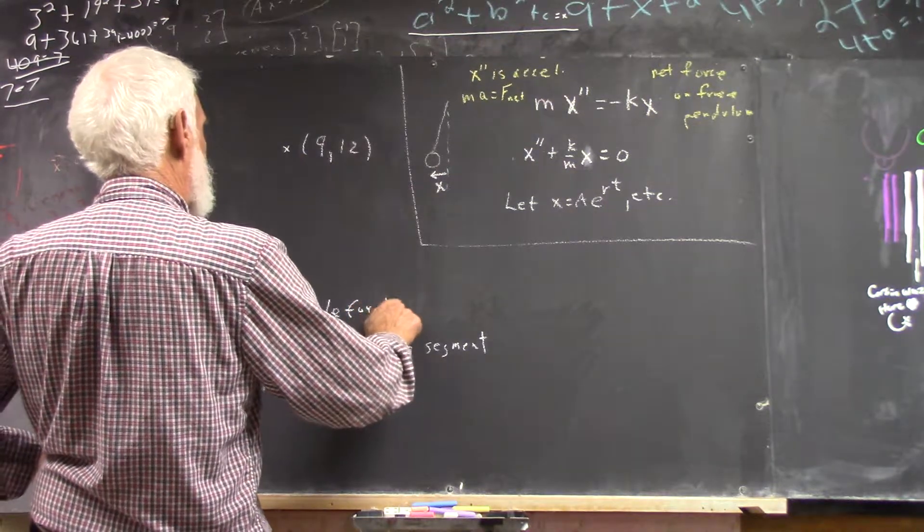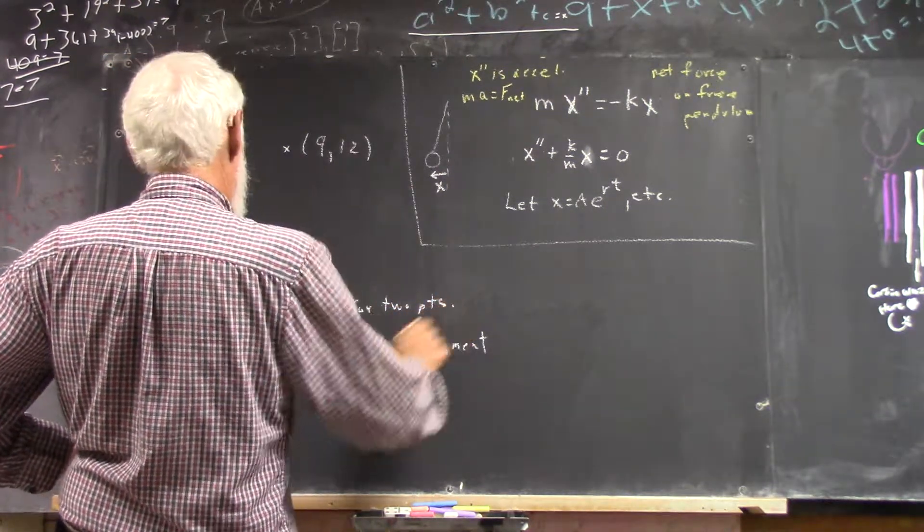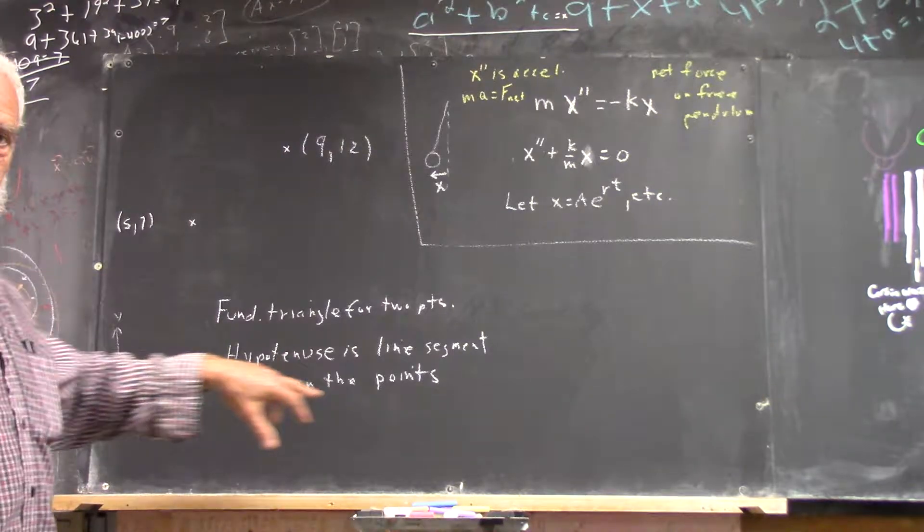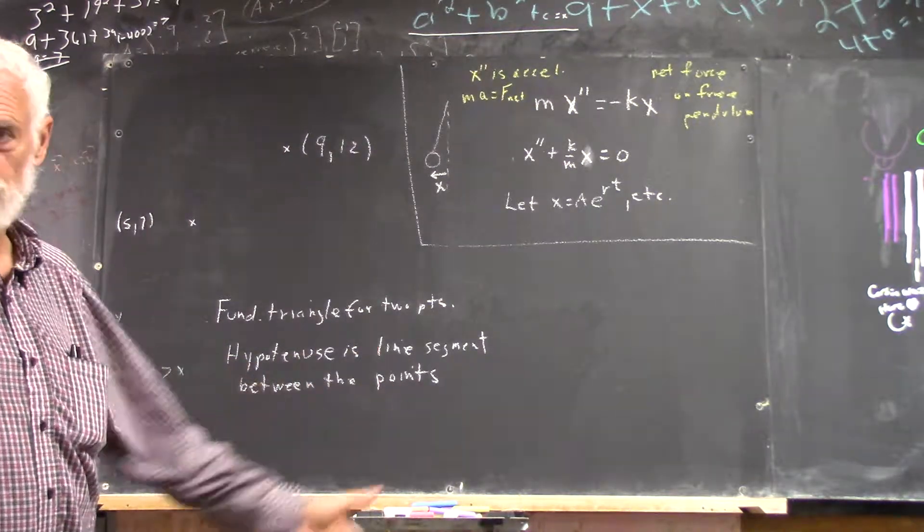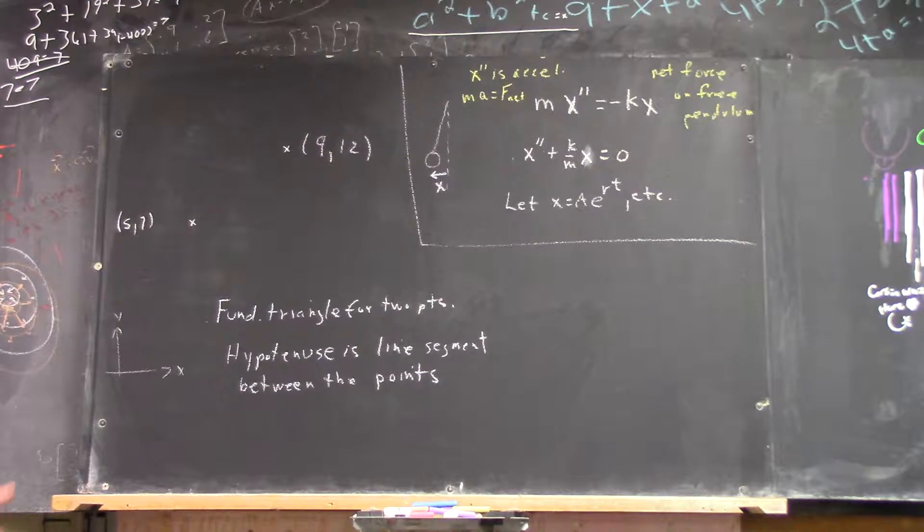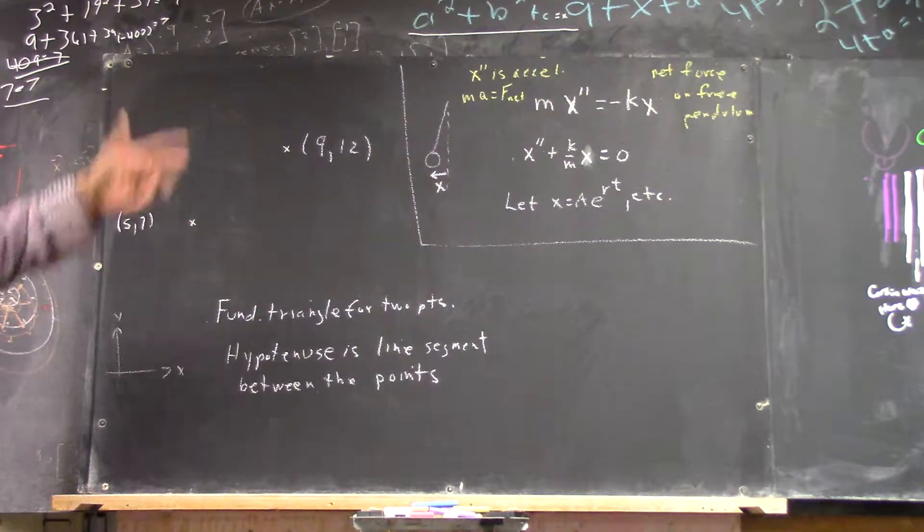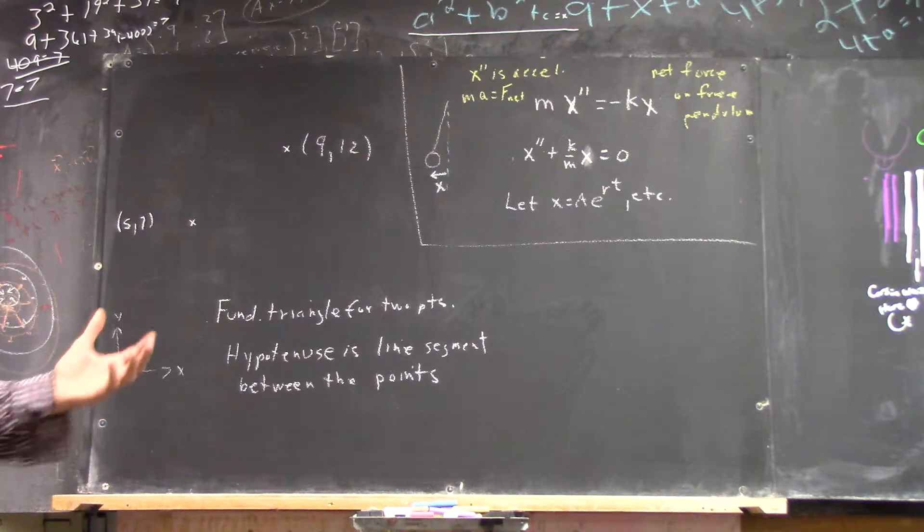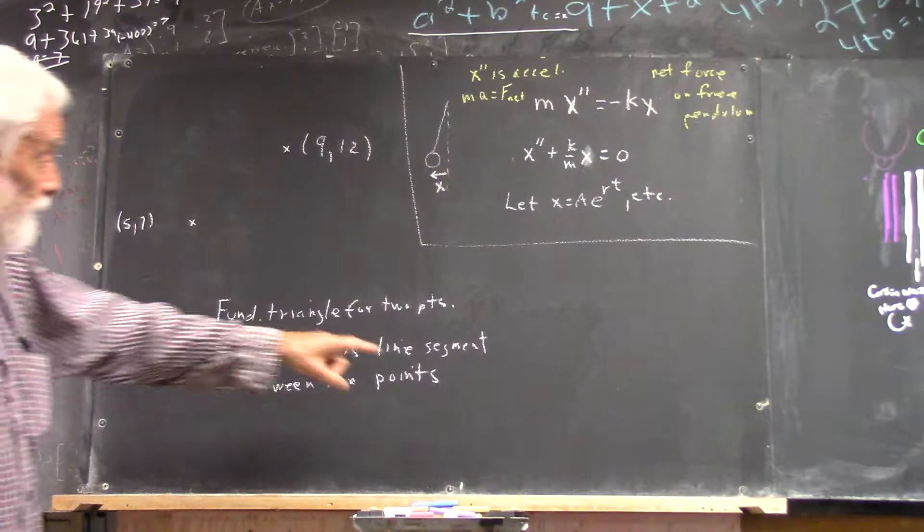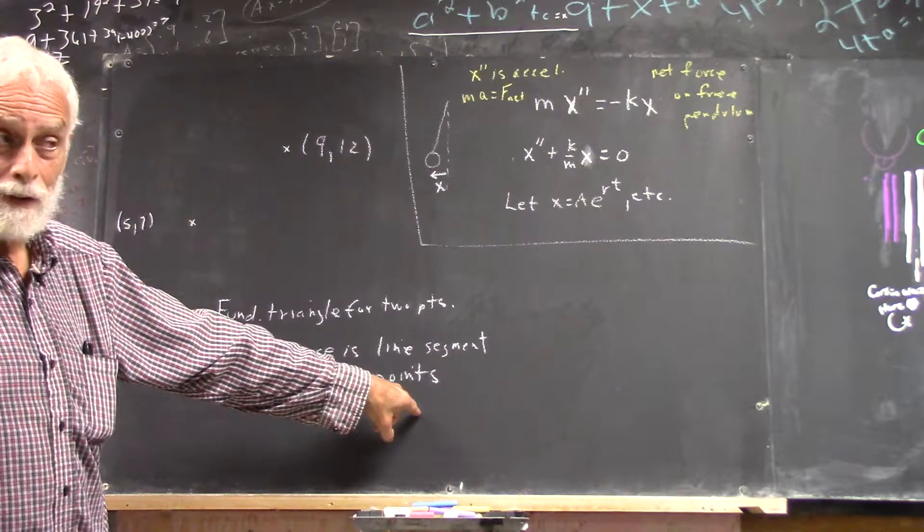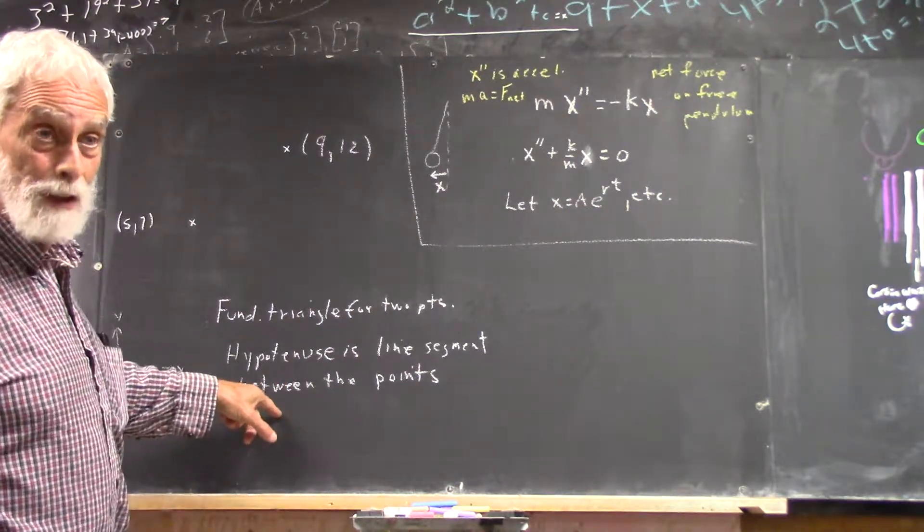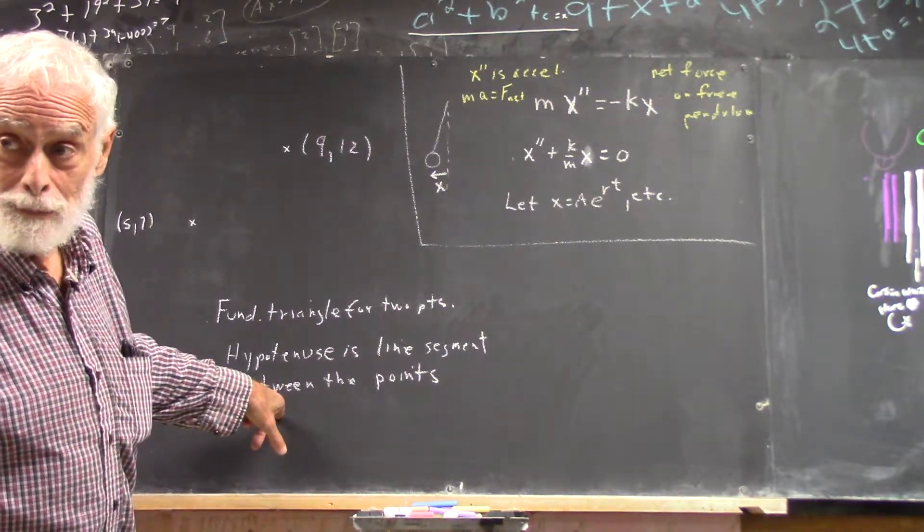I should say for two points. The hypotenuse is a line segment between the two points. The endpoints are the two points. So do I now know something about the fundamental triangle for these two points? Could I sketch something? I've got two points. There's a line segment between the points. I can sketch that line segment. You don't need to know anything else about the fundamental triangle to sketch the line segment, and that line segment is going to be the hypotenuse.